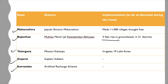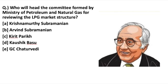Another important scheme is Telangana's Mission Kakatiya, which irrigates around 19 lakh acres of land. Gujarat's Sujalam Sufalam and Karnataka's Artificial Recharge scheme are also noteworthy. The next question: who will head the committee formed by the Ministry of Petroleum and Natural Gas for reviewing the LPG market structure? Out of five options, option C — Kirit Parekh — is the right answer.